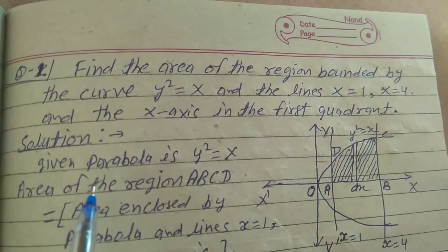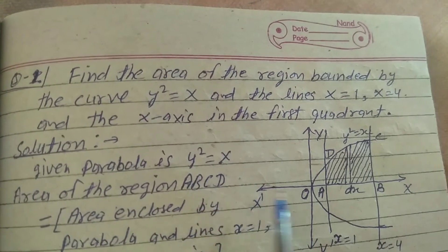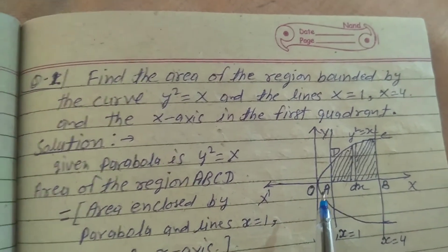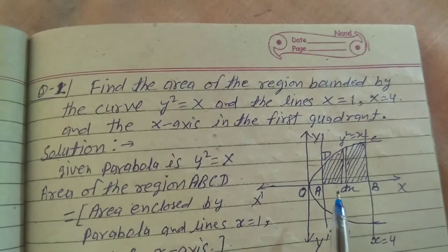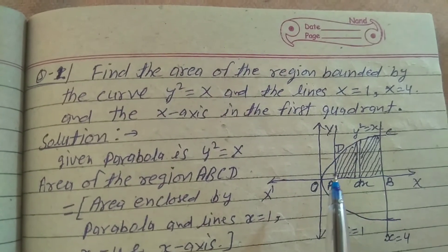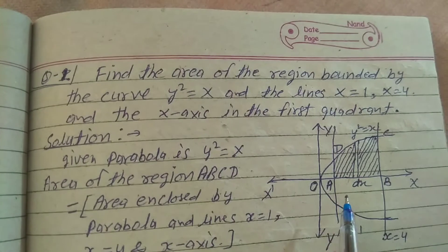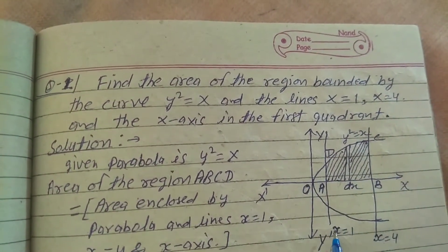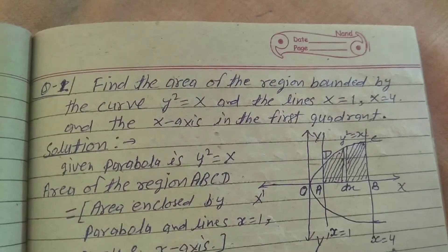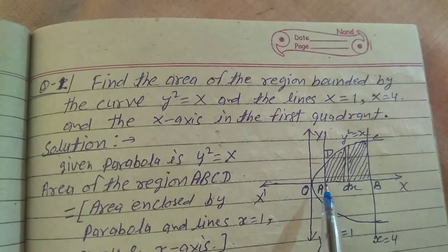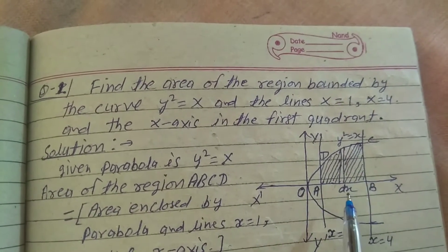Let's start. Given the curve y² = x, here draw the diagram according to question. The curve is in x-axis, y² = x, and line x = 1 is this and x = 4 is this. I want to find out the area in first quadrant.